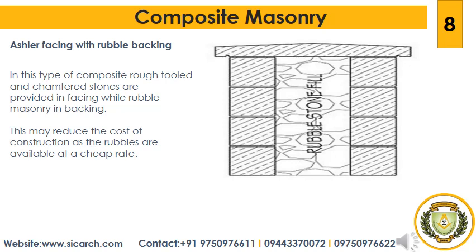The fifth type is ashlar facing with rubble backing. In this type of composite masonry, rough tooled and chamfered stones are provided in the facing while rubble masonry is provided in the backing. This may reduce the cost of construction as rubbles are available at a cheaper rate.